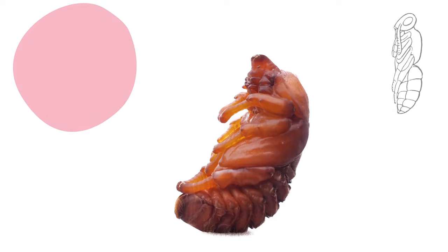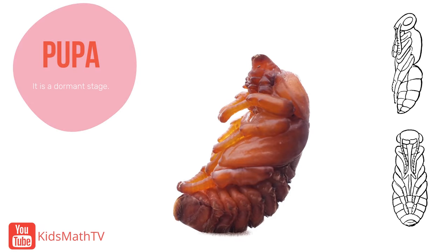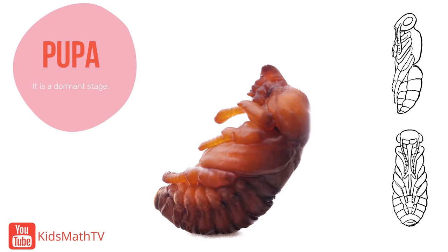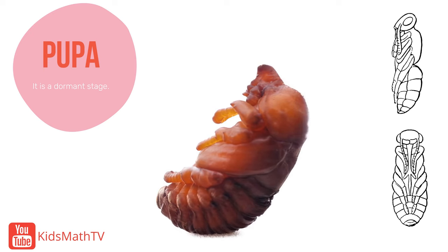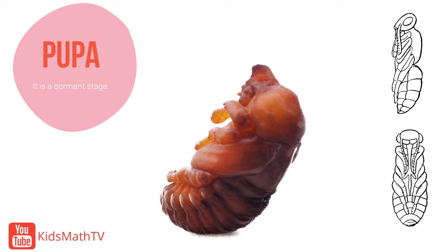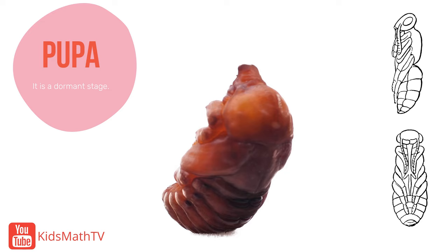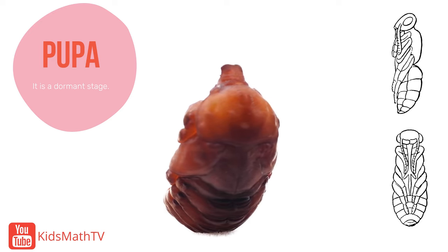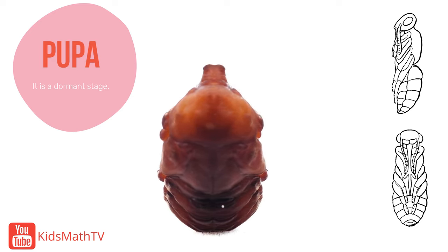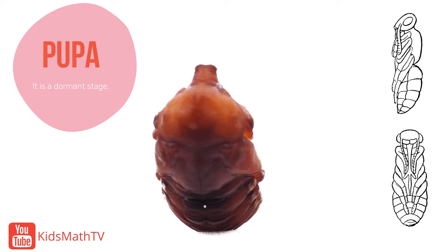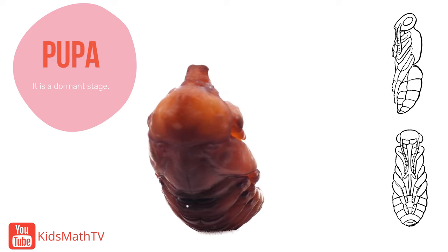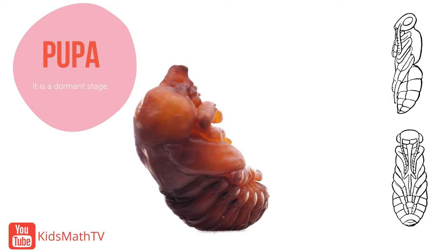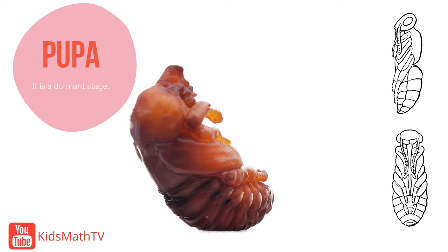The pupa is the next stage after the larva. Like the larva stage, it is a dormant stage and is further protected by a cocoon around it. It is during this stage that recognizable features of an adult bee are formed, like the legs, head, thorax, and abdomen.